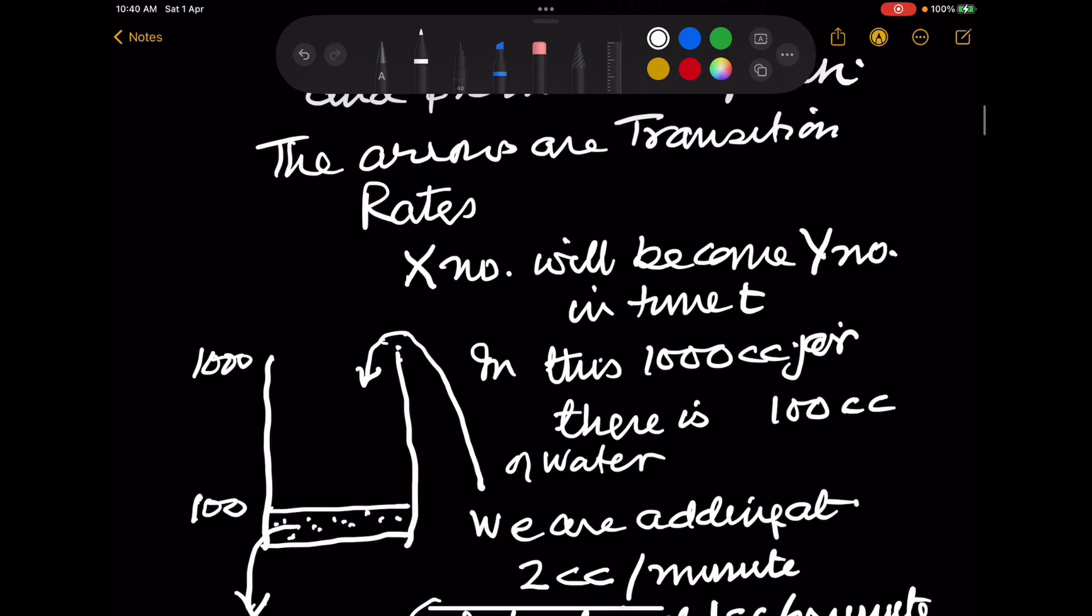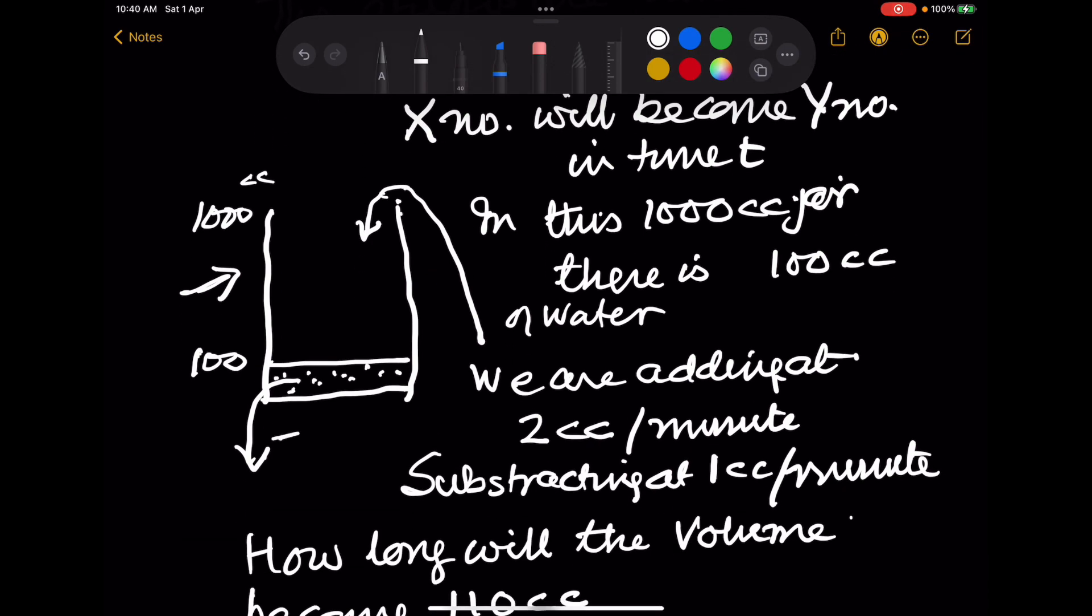So now let us start understanding these rates. Here you see a jar. This jar is a 1000 cc jar. However, it is filled with 100 cc of water. Now, we are adding water at 2 cc per minute and we are subtracting water at 1 cc per minute.